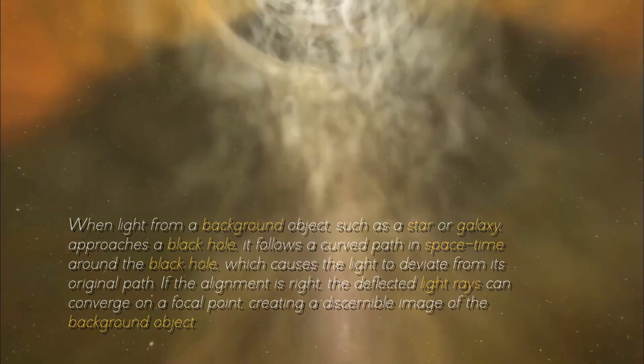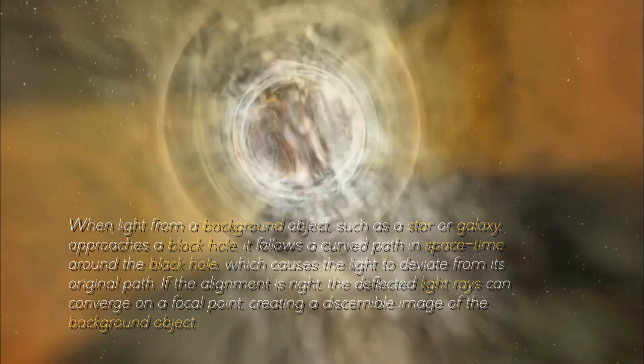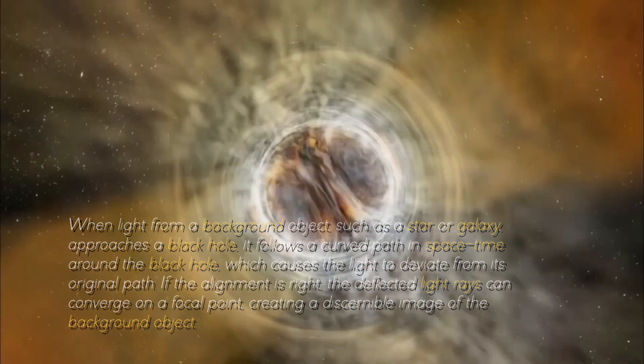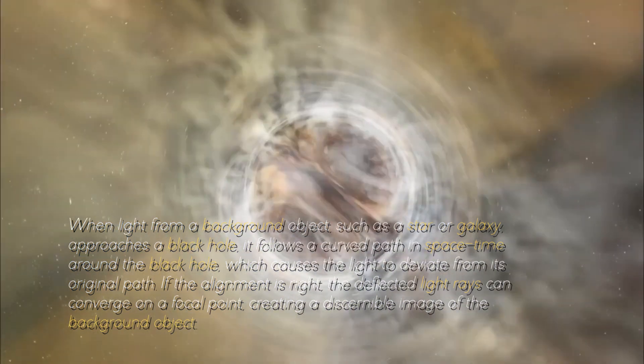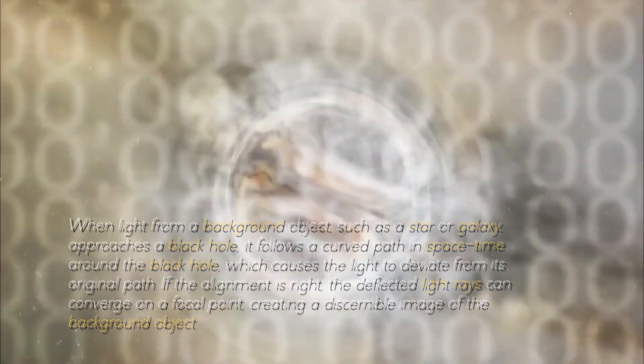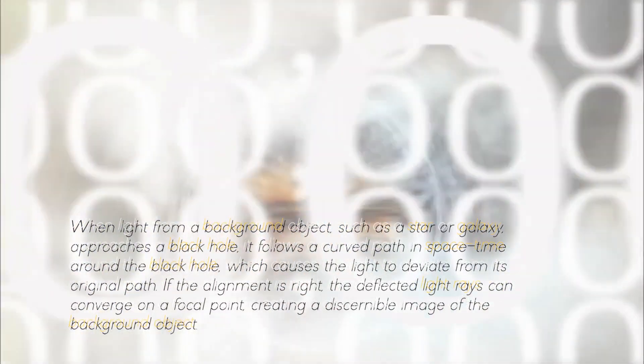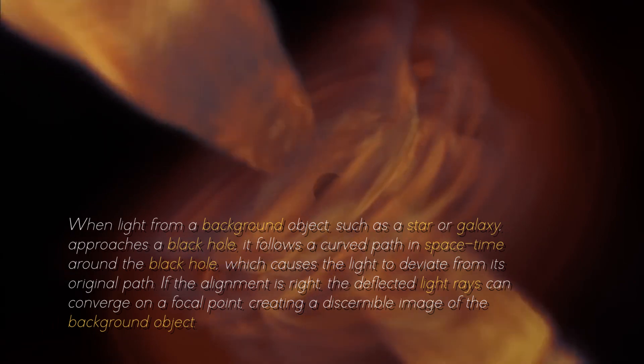When light from a background object, such as a star or a galaxy, approaches a black hole, it follows a curved path in space-time around the black hole, which causes the light to deviate from its original path. If the alignment is right, the deflected light rays can converge on a focal point, creating a discernible image of the background object.